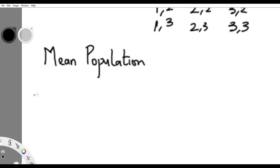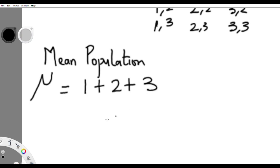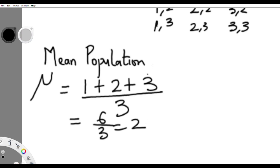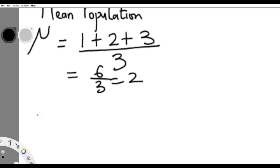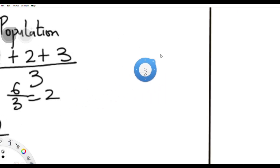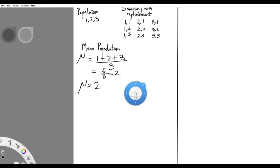The mean for the population — the symbol is mu. Since we have one, two, three, we sum them: one plus two plus three equals six, divided by three, which gives us two. So the mean for the population is two.